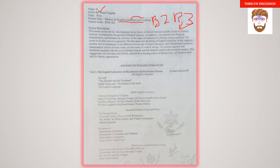This course covers the key developments in the history of British literature and the history of literary criticism. It emphasizes the growth of English literature, its tradition, convention, and changing character, including an overview of major moments in its literary critical tradition. The course is divided into two segments: the first deals with the history of English literature, introducing students to different time periods, their fundamental concerns, respective writers, and the nature of creative writing. The second segment covers the history of literary criticism from the ancient classical world to the 20th century.